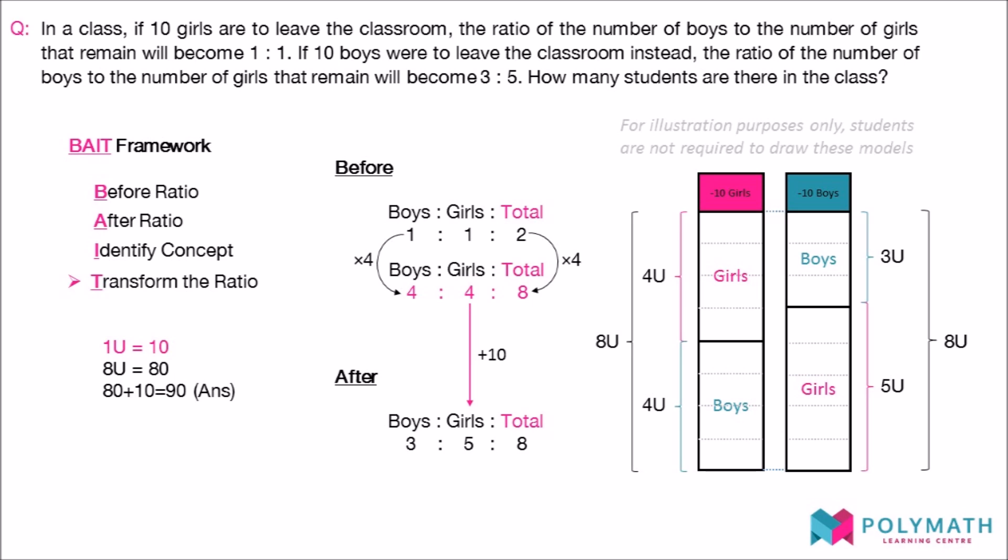There is a total of 8 units in the ratios. Thus, there are 80 students remaining in the classroom. However, don't forget to add back the 10 students who are assumed to have left. Therefore, there are a total of 80 plus 10 students and the answer is 90 students in the class.